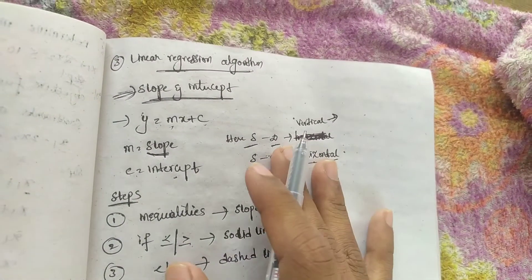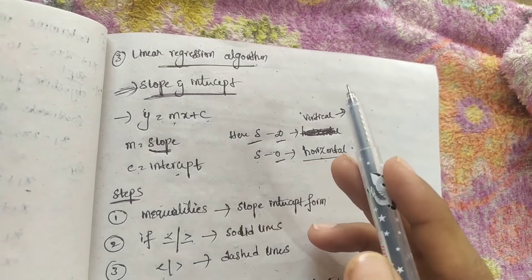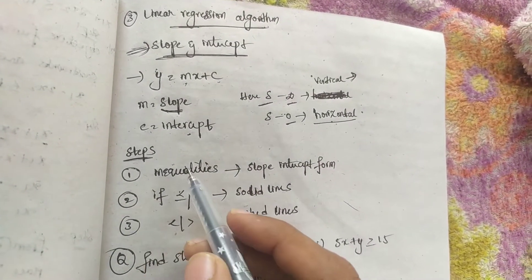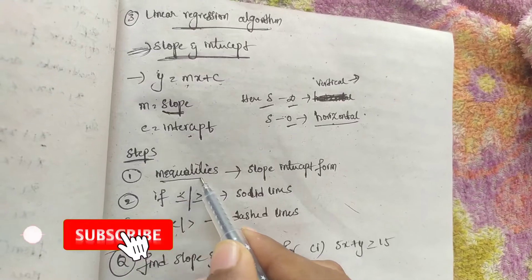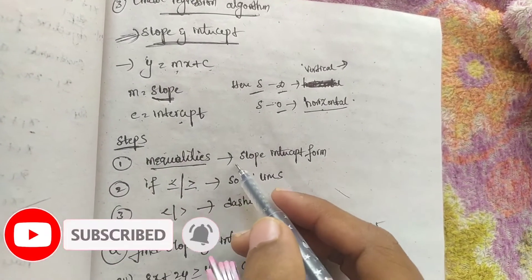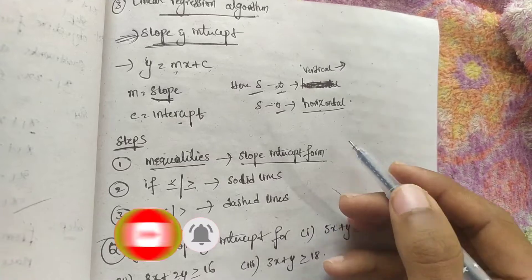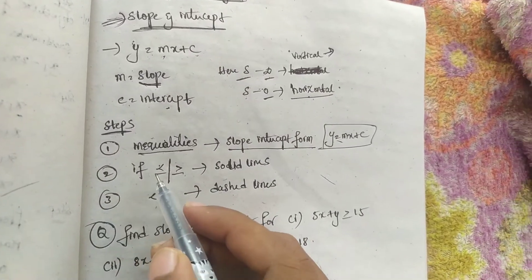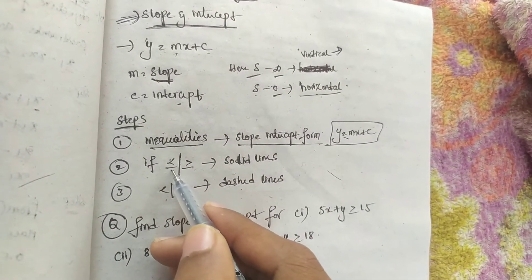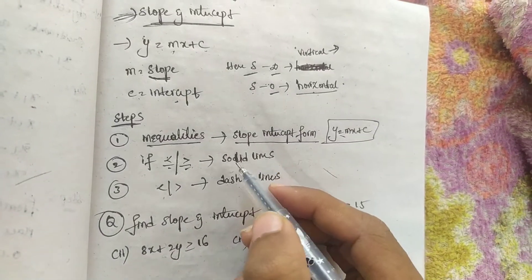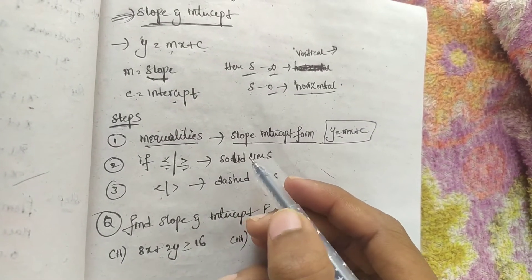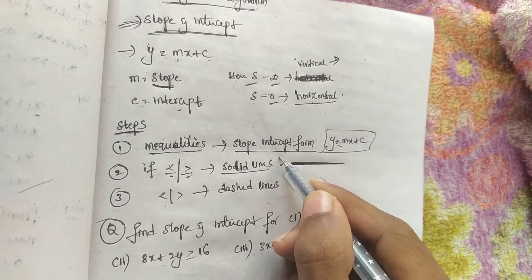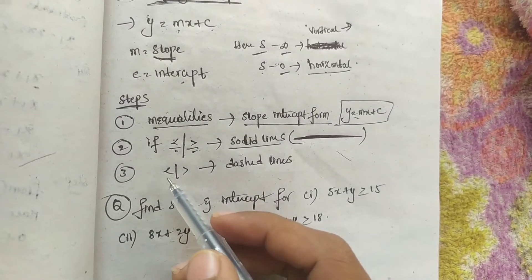Here are some steps to follow for slope and intercept form. The first step is: if the given question is in constant or inequality form, we have to change it into slope-intercept form, that is y equals mx plus c. If the constants are less than or equal to, or greater than or equal to type, in the graph we get a solid line — a dark line like this.